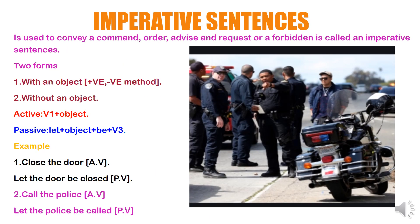I have covered 8 types of tense in active and passive voice. Next, we will discuss other topics of active and passive voice: imperative sentences, interrogative sentences, and modals. Imperative sentences are used to contain a command, order, advice, request, or a forbiddance.